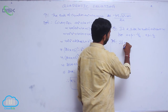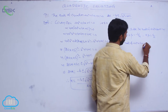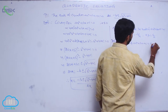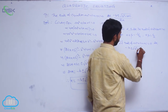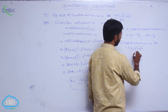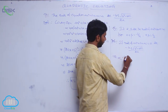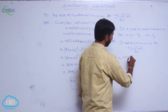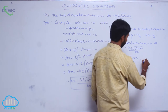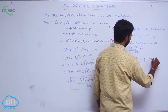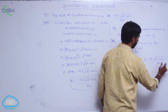Since the roots of Ax² + Bx + C = 0 are: α = (-B + √(B² - 4AC)) / 2A and β = (-B - √(B² - 4AC)) / 2A.